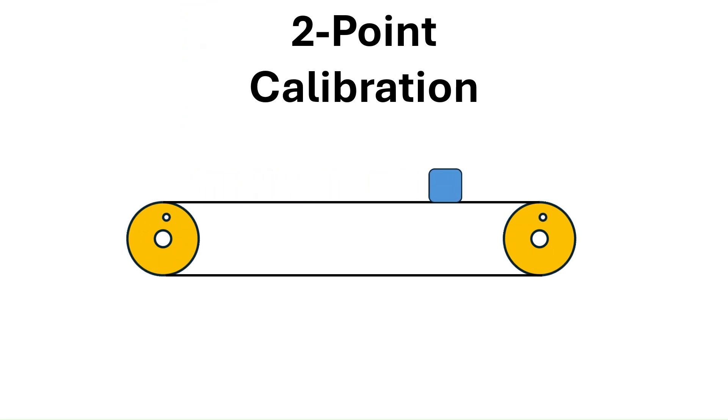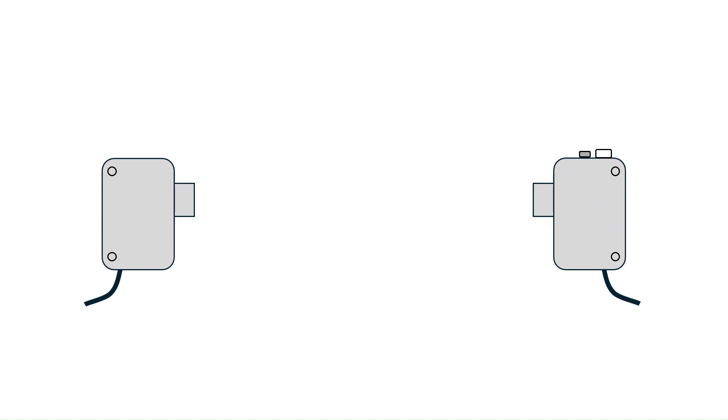For this application, we will be calibrating a sensor to detect when a box passes by. We have a through-beam sensor with a transmitter pointed at a receiver. And like most sensors, it has an output light and a set button.